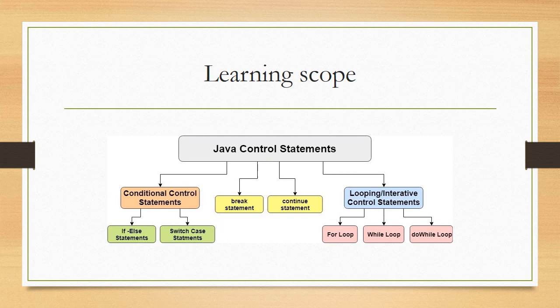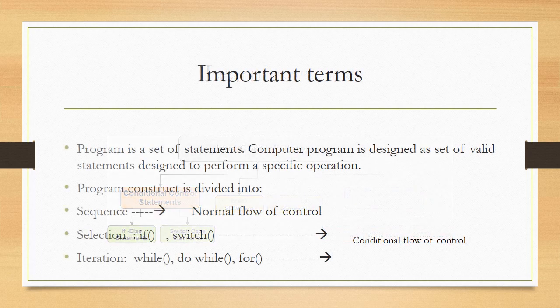Java control statements are divided into three parts: number one, conditional control statements; number two, break and continue statement; and number three, looping or iterative control statement. In the first part we will understand conditional control statements and discuss if-else statement and switch case. The remaining two we will discuss in the next presentation.